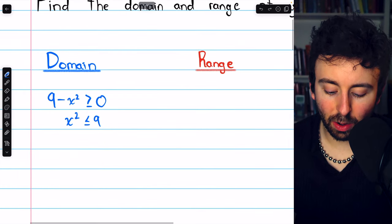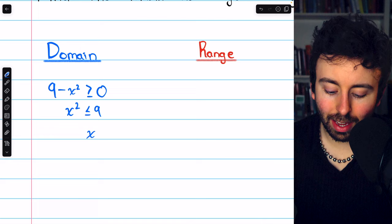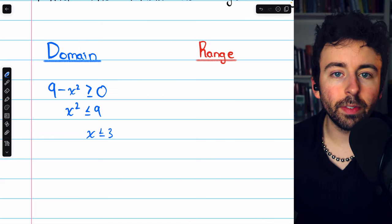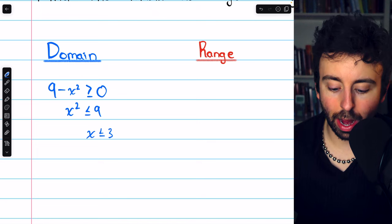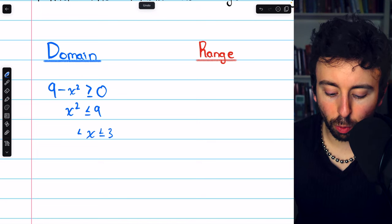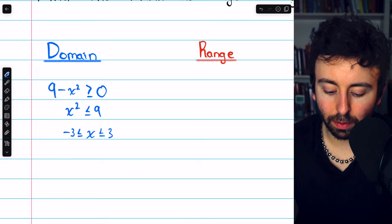Now if x squared is less than or equal to 9, that means x has to be less than or equal to 3. If it's any bigger than 3, then its square would be bigger than 9. But x also has to be greater than or equal to negative 3.